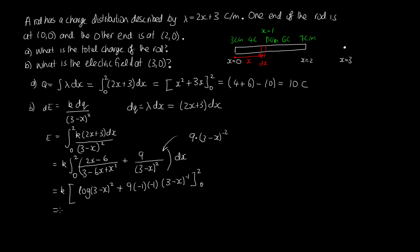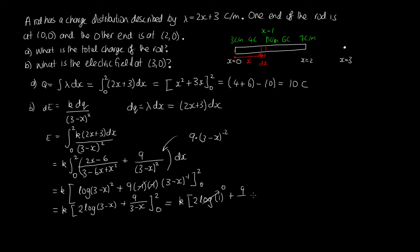Evaluating at the limits, this becomes k times: 2 log(3 minus x) plus 9 over (3 minus x), from 2 to 0. Substituting x equals 2: log(1) is zero, plus 9 over 1 equals 9. Substituting x equals 0: minus 2 log 3, minus 9 over 3. This simplifies to k times (9 minus 3 minus 2 log 3), which is k times (6 minus 2 log 3).